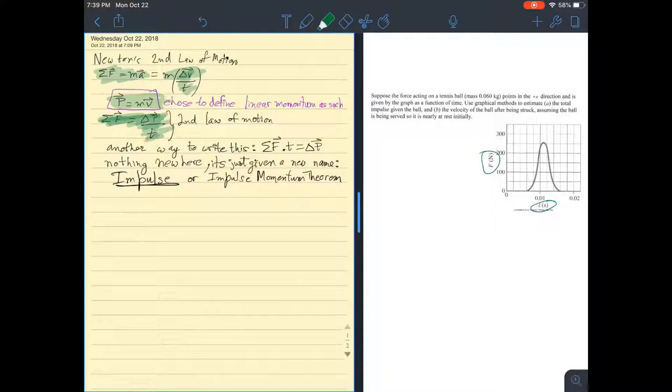And if you look, just another way of writing the same equation is like this. Just multiply both sides by T and this side has only left with momentum or change in momentum. This is important. Change in momentum. And this side is left with sum of all forces times time.